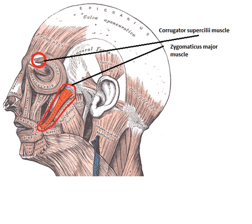For example, a video camera might capture facial expressions, body posture, and gestures, while a microphone might capture speech. Other senses detect emotional cues by directly measuring physiological data, such as skin temperature and galvanic resistance. Recognizing emotional information requires the extraction of meaningful patterns from the gathered data.